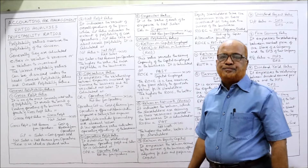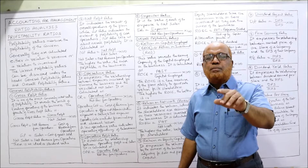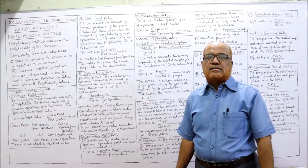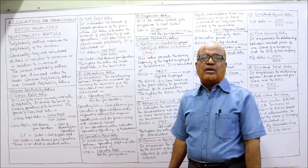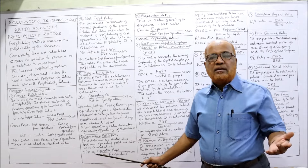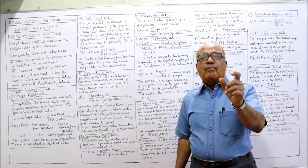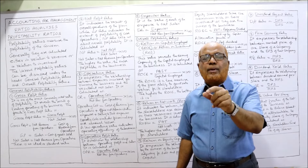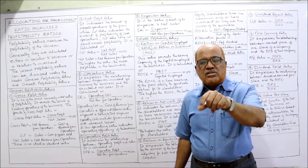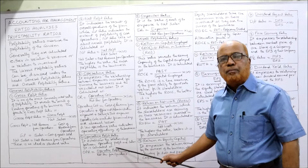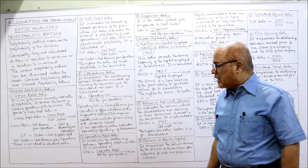Operating profit ratio expresses the relationship between operating profit and net sales or net revenue from operations. Higher the ratio, better it is. To calculate operating profit: gross profit minus operating expenses gives operating profit. The formula is: operating profit divided by net revenue from operations into 100.